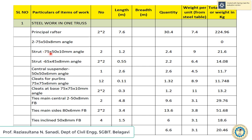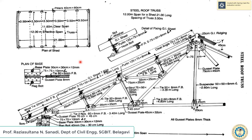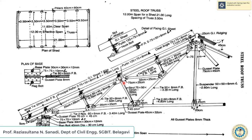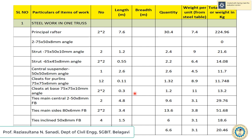Next is the strut, 75 x 50 x 10 mm angle, 1.2 meters long. There is 1 strut at each side — left and right — giving 2 numbers. Multiplying the number by the length gives the quantity. From the steel table, multiplying quantity by weight per unit gives a total quantity of 21.6 kg.